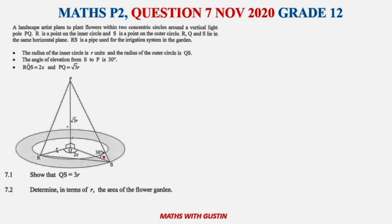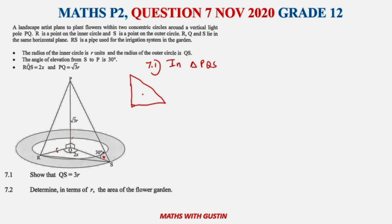7.1 says that we need to show that QS equals 3r. Let's look at triangle PQS. I always say: make life easy for yourself — draw this separate from the whole diagram, but make sure you follow whatever is there and label everything correctly so that you don't make a mistake.